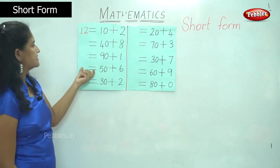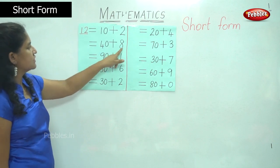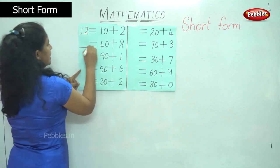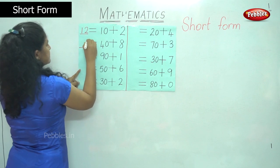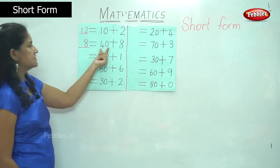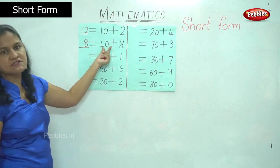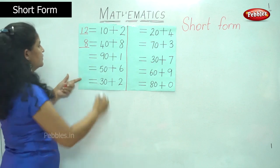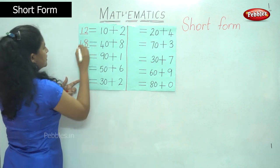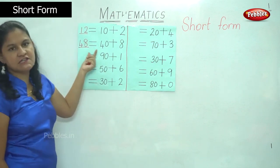The next number is 40 plus 8. So in the ones place I have 8 ones, and in the tens place I have 4 tens or 40, which is number 4. So my answer is 48.